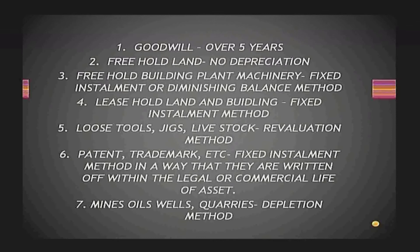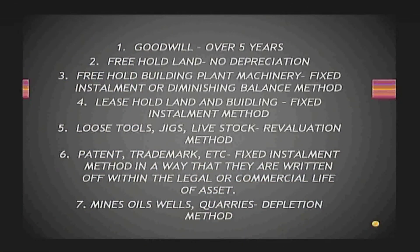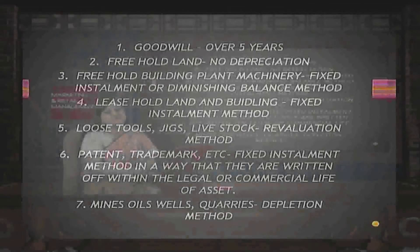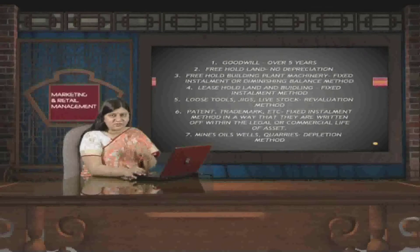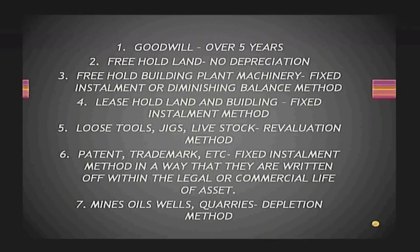Freehold land need not be depreciated because the value of land is going to appreciate over time, so by no means is freehold land depreciated in our books of accounts. For freehold building and plant, we use either the fixed installment method or the diminishing balance method. These two methods — also called the WDV method and the cost method — are generally used for freehold building, plant, and machinery to record depreciation transactions.